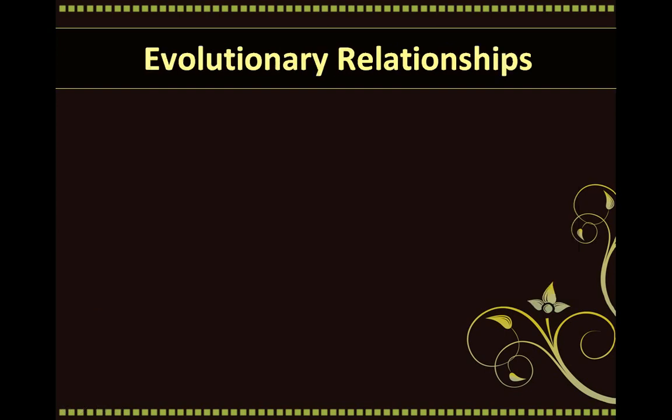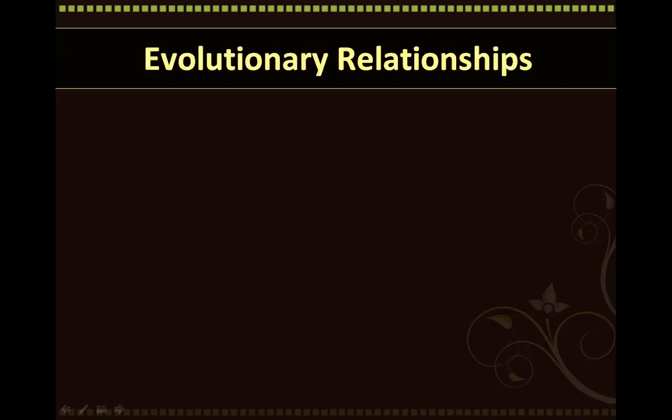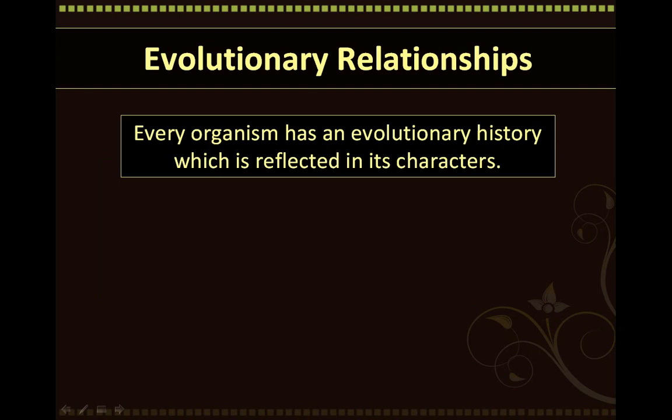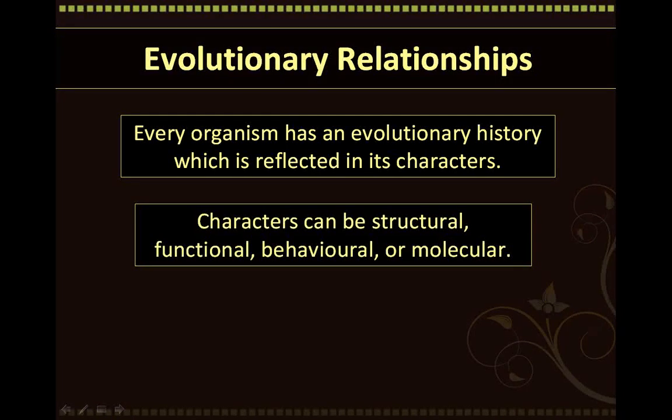Let's first start with the discussion of evolutionary relationships. Every organism has an evolutionary history which is reflected in its characters, also known as its characteristics. These characters can be structural or anatomical, functional or physiological, behavioral or molecular, which can include DNA, RNA, or protein sequences.